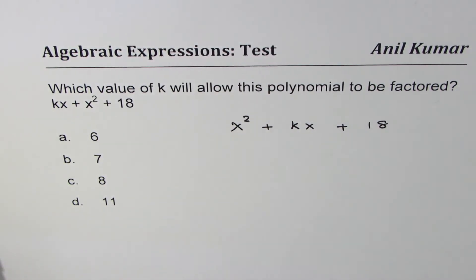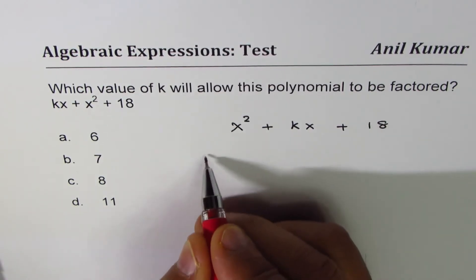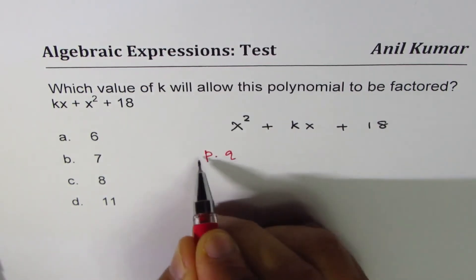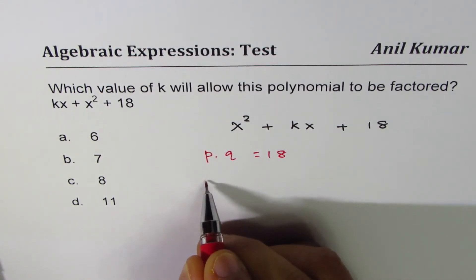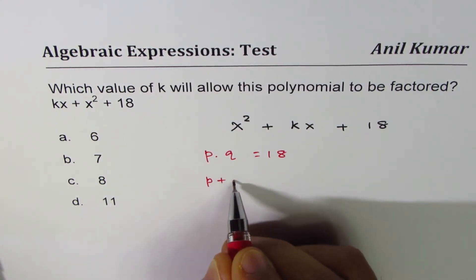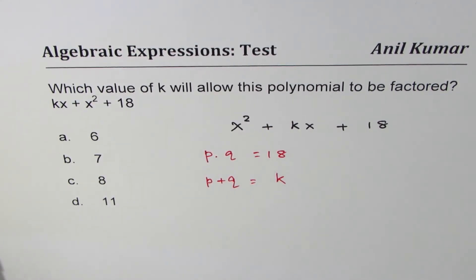let's look into product of two numbers whose product is 18. So we're looking for p times q, product of two numbers to be 18, and we're looking for this sum, p plus q, as k. So those are the possible combinations.